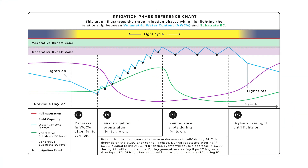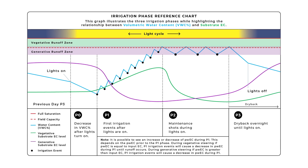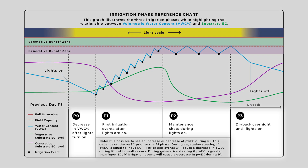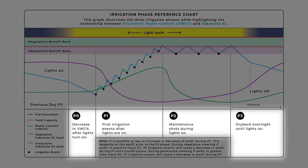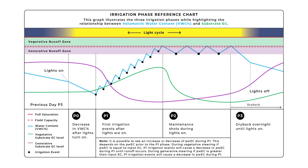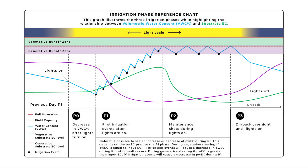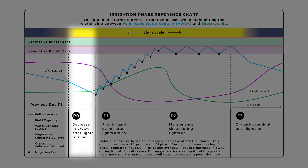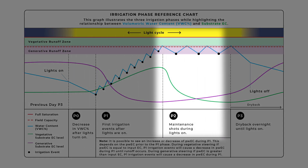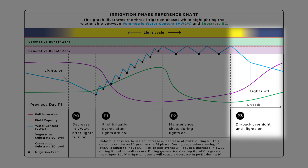To more easily understand precision irrigation strategy, you must first understand an irrigation phase graph. This is your typical irrigation phase graph. It illustrates the four irrigation phases while highlighting the correlation between volumetric water content percent and substrate EC. Irrigation phases are broken up into P0, P1, P2, and P3.